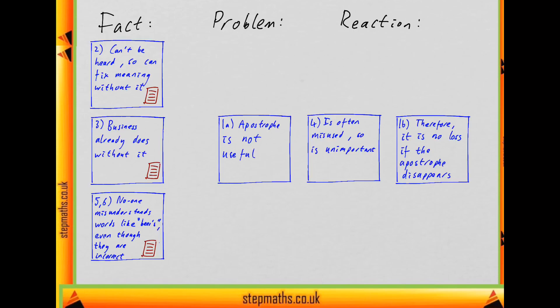How can we decide which of these is the main conclusion? A couple of things to note. Firstly, this sentence was immediately supported by this sentence. They were giving examples of words like beers being used in support of this claim, that because it's often misused, it's unimportant. So it looks like this sentence is directly supporting this.